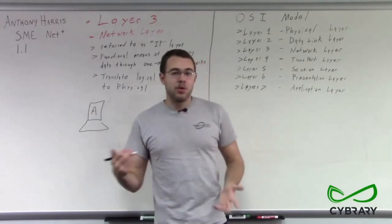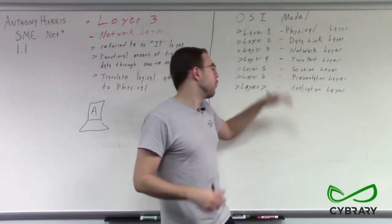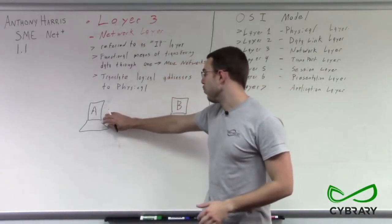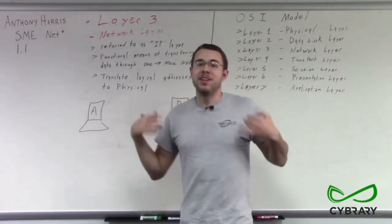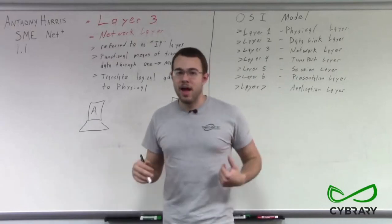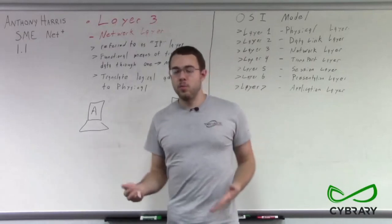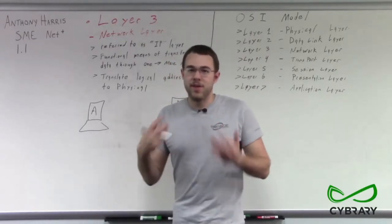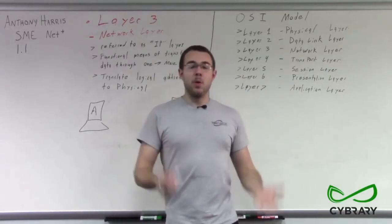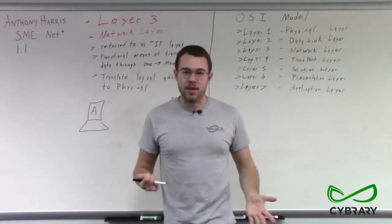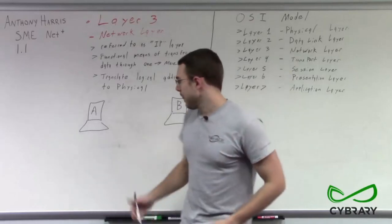The OSI model can help us with troubleshooting — it helps us identify where the issue is in our transportation between one point and another. If we have a layer 1 issue, because we know layer 1 is our physical layer, we know there's something wrong with the physical connection. Maybe a cable was cut by accident, maybe our network interface card burned out or was ripped out of the socket, or maybe the pins are bent. Those are all layer 1 physical issues.